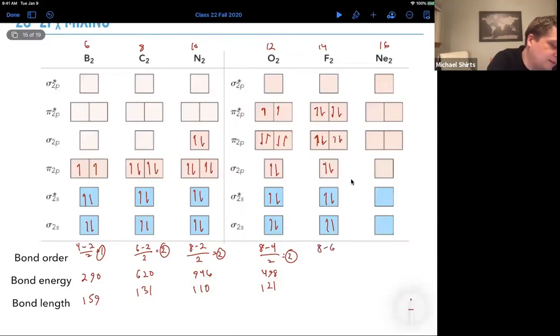We have 8 in bonding orbitals, 6 in anti-bonding orbitals divided by 2, bond order of 1, 159 kilojoules per mole and a longer length of 143.